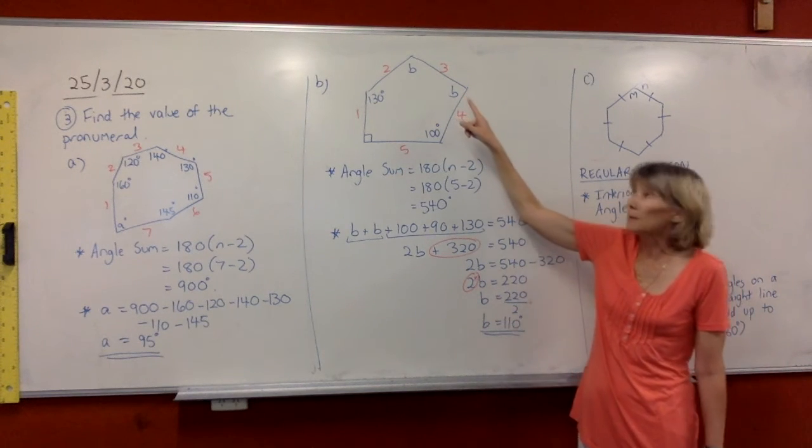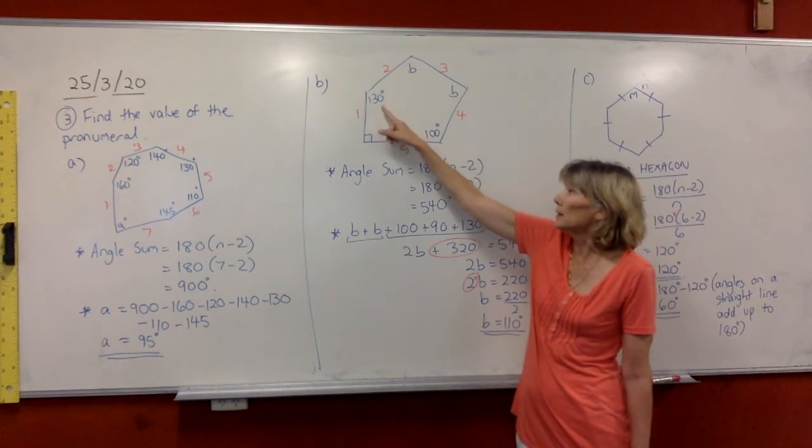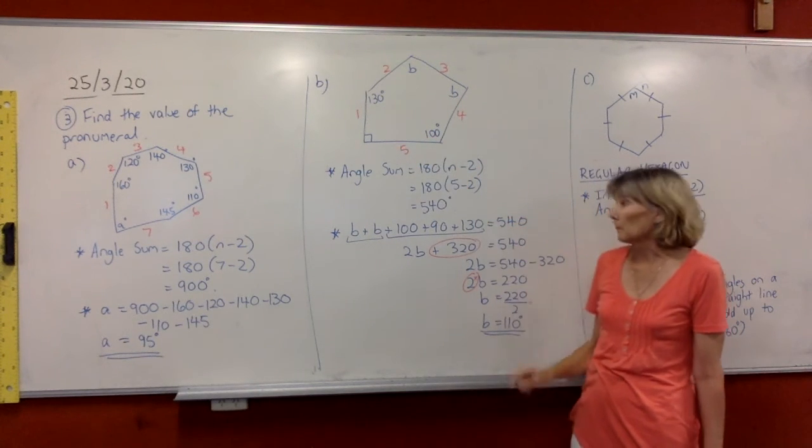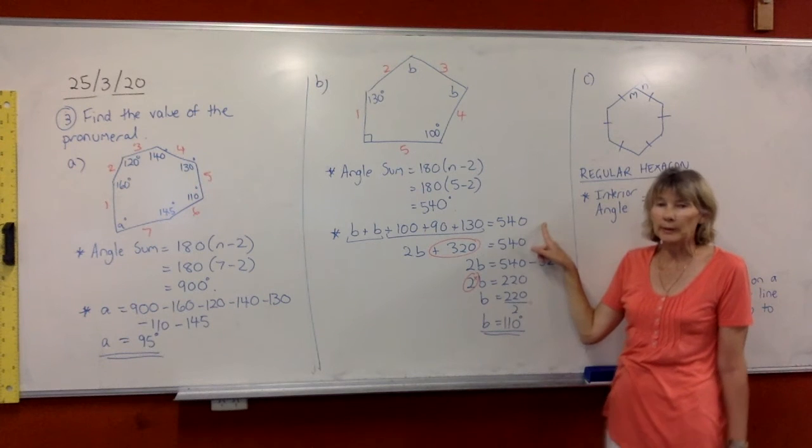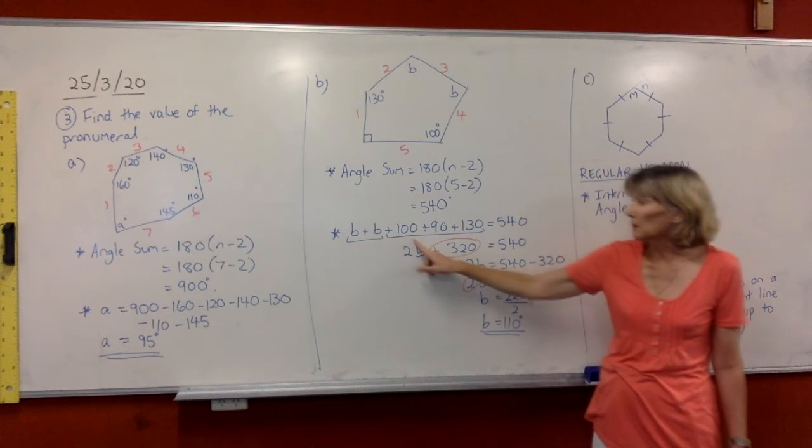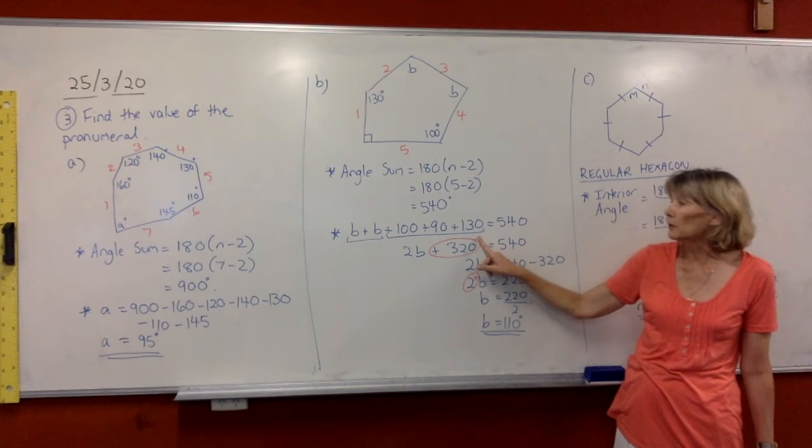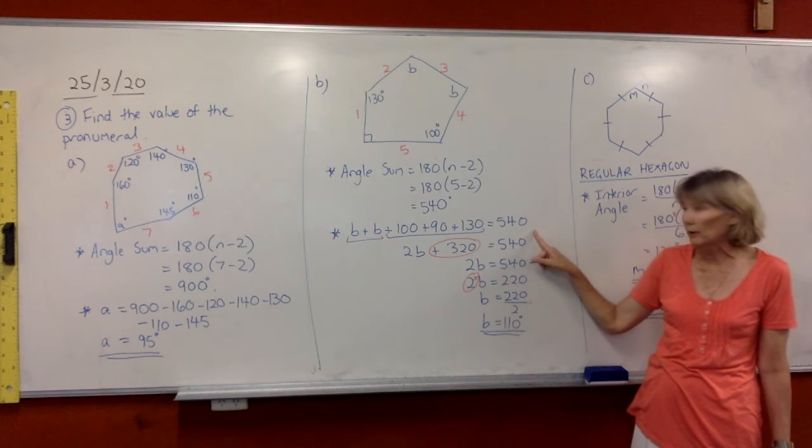So if we make a little statement here, we can say that all of these angles are going to add up to that angle sum of 540. So we're going to write b plus b plus 100 plus 90 plus 130 and they all equal 540.